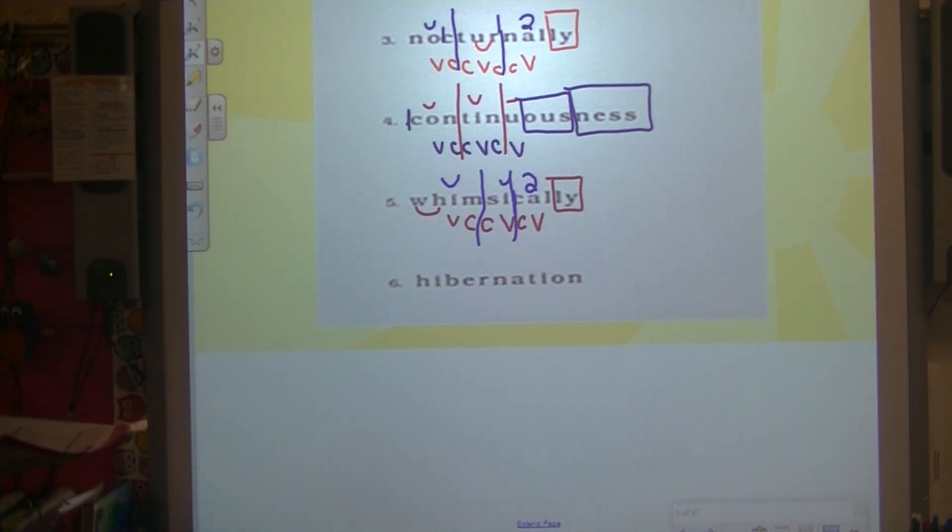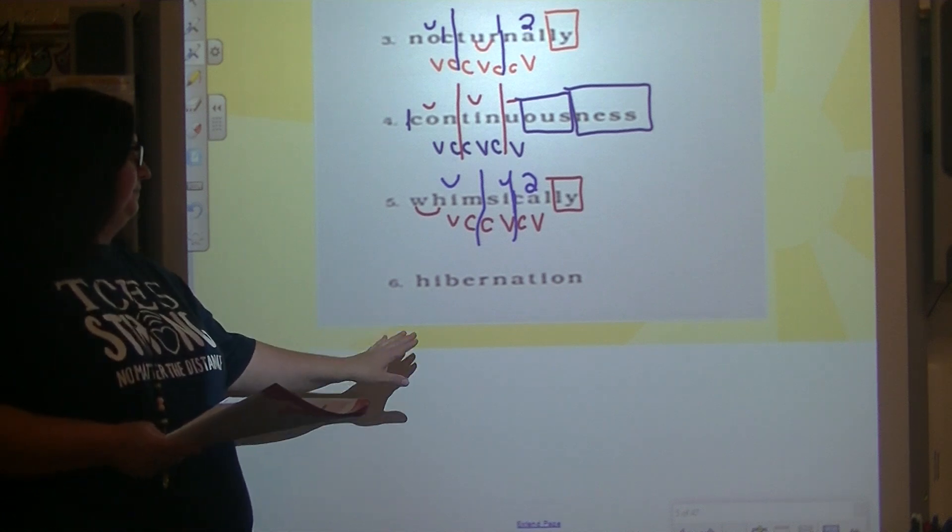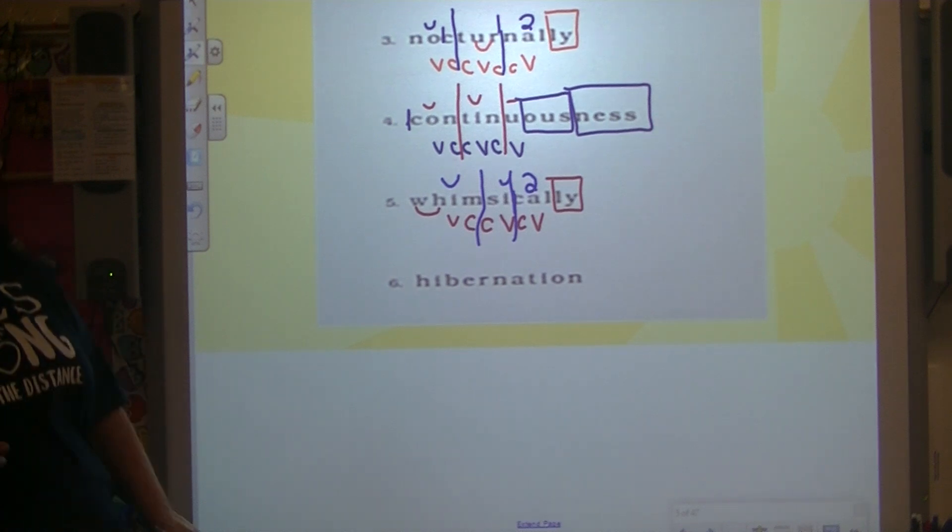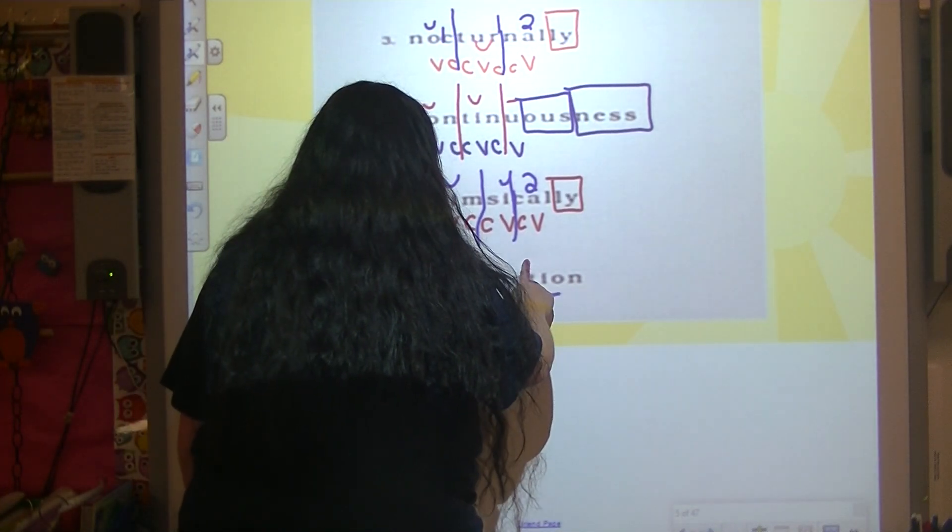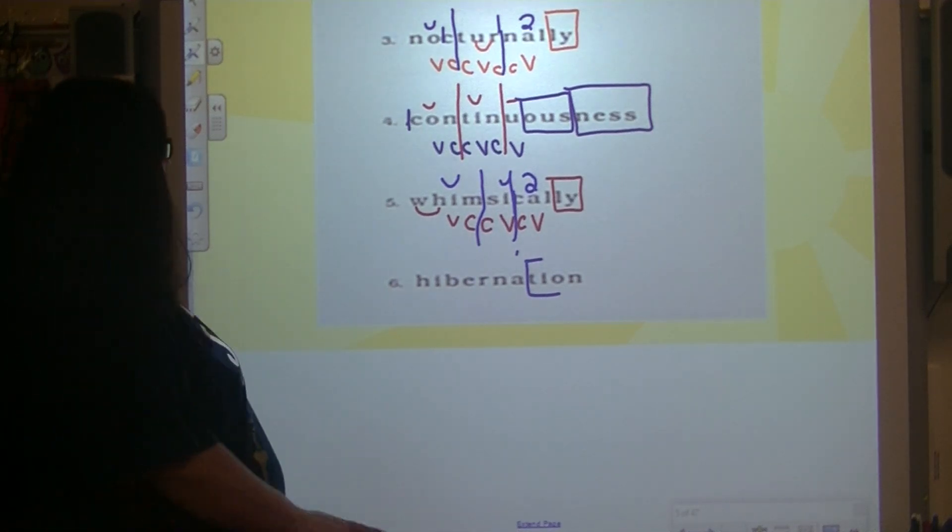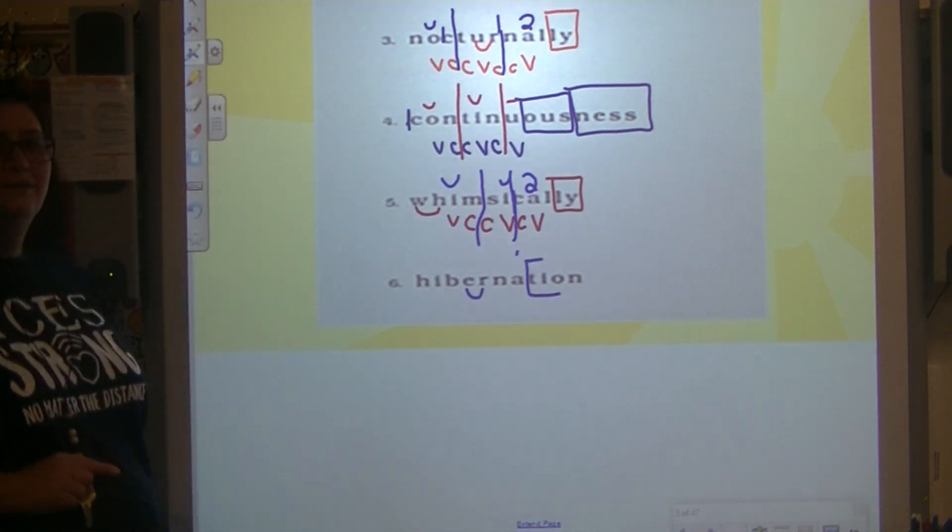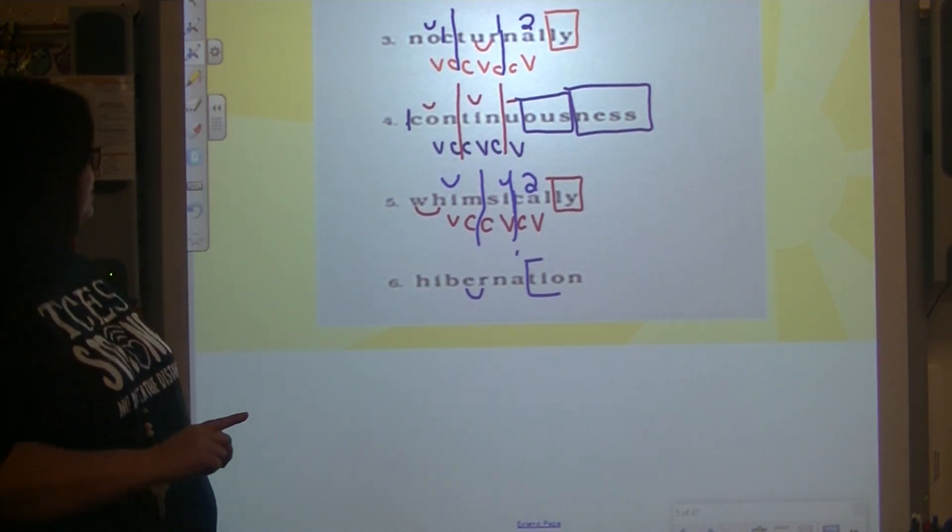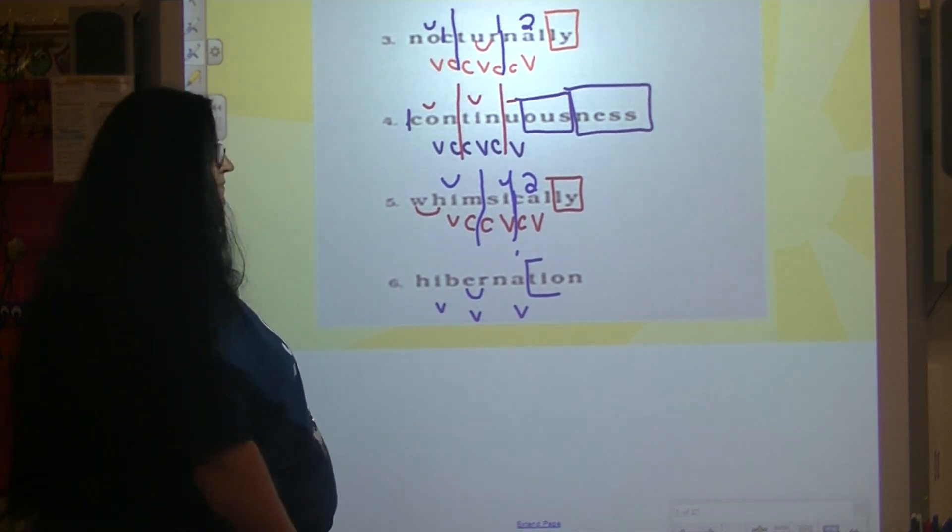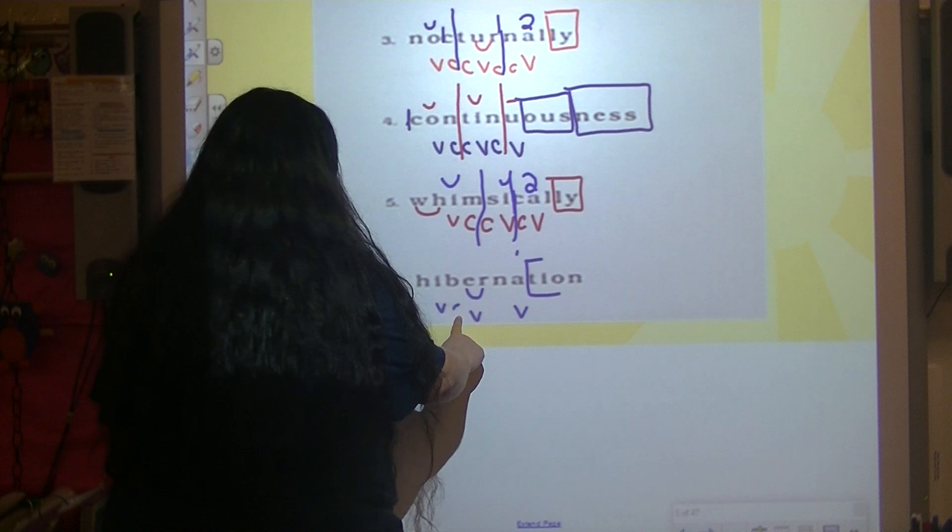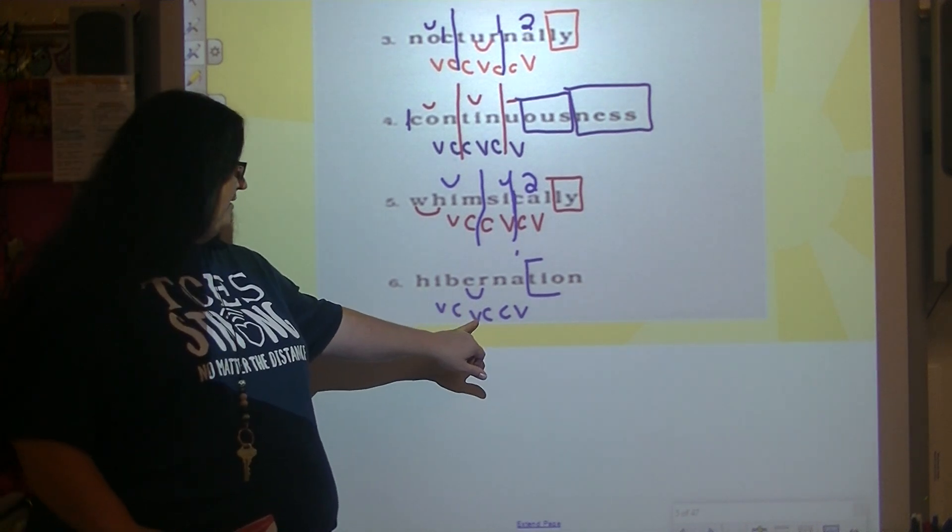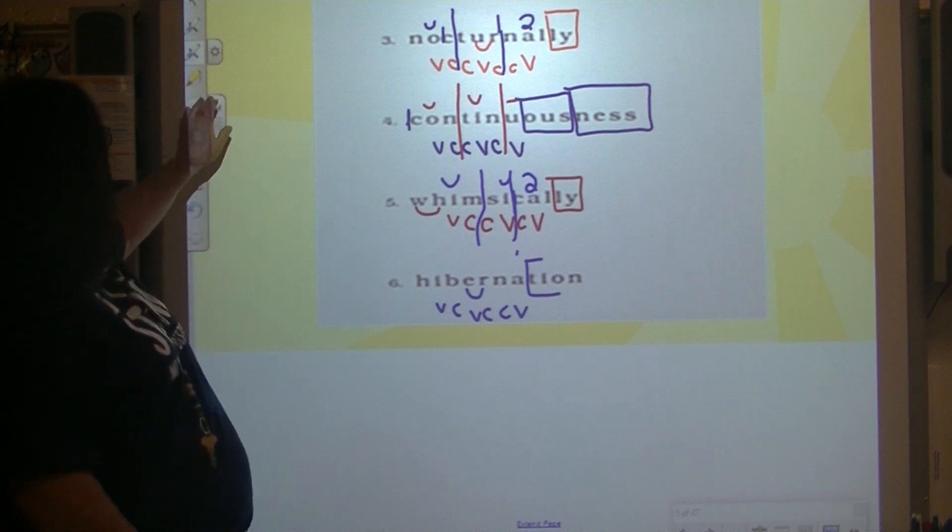Number six. Alright. What do you see? T-I-O-N. Any other coding? ER. Alright, vowels. I-E-A. B-R-N-N are all consonants. So it's vowel, consonant, vowel, then vowel, consonant, consonant, vowel. So it's backwards this time. We have V-C-V first.